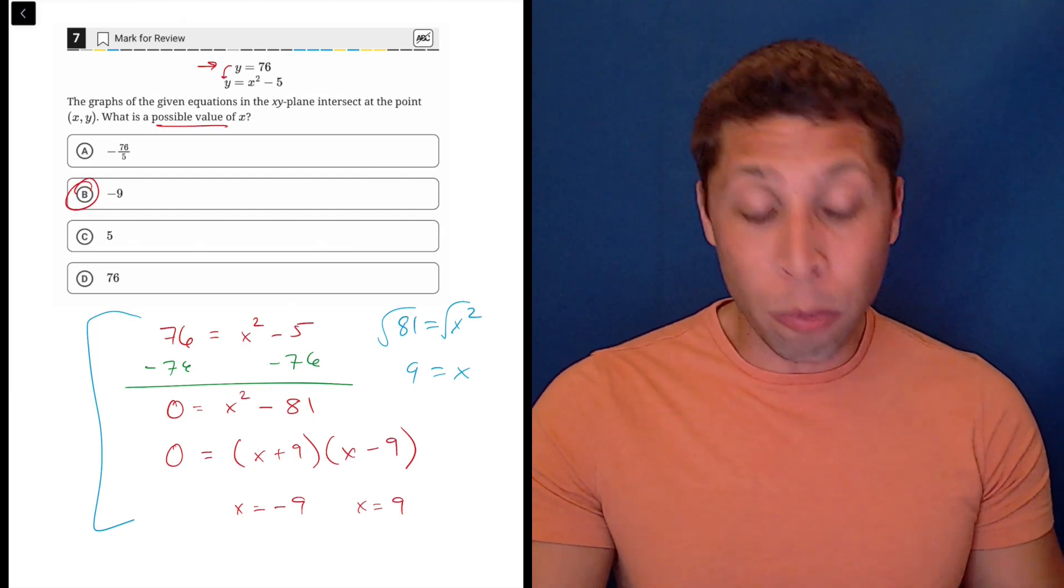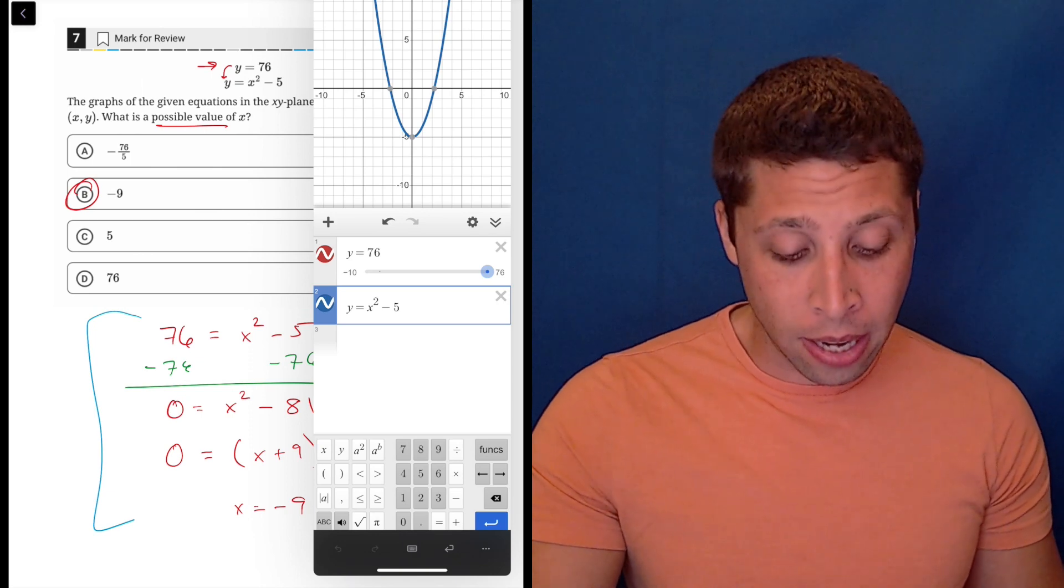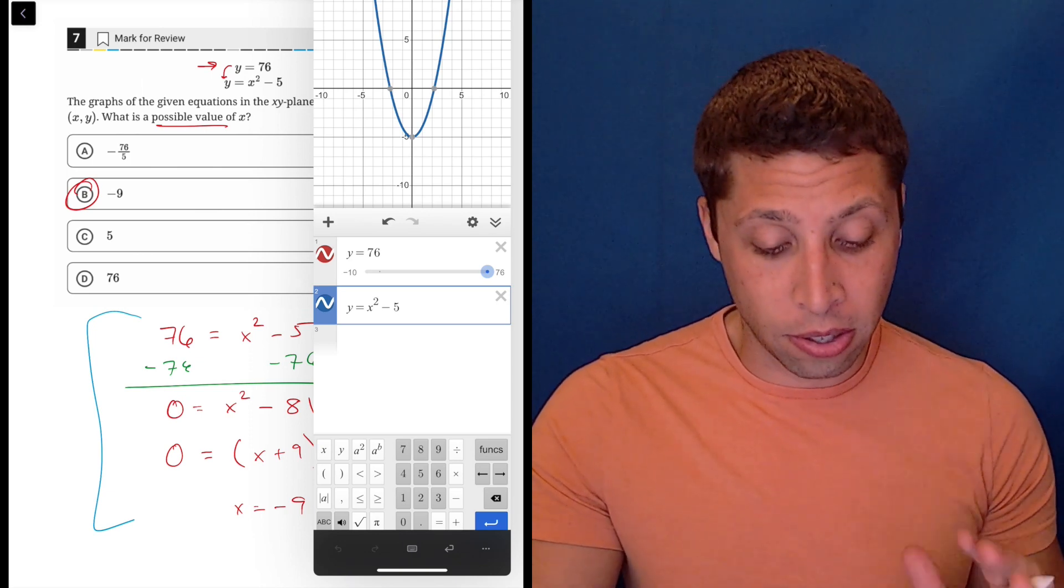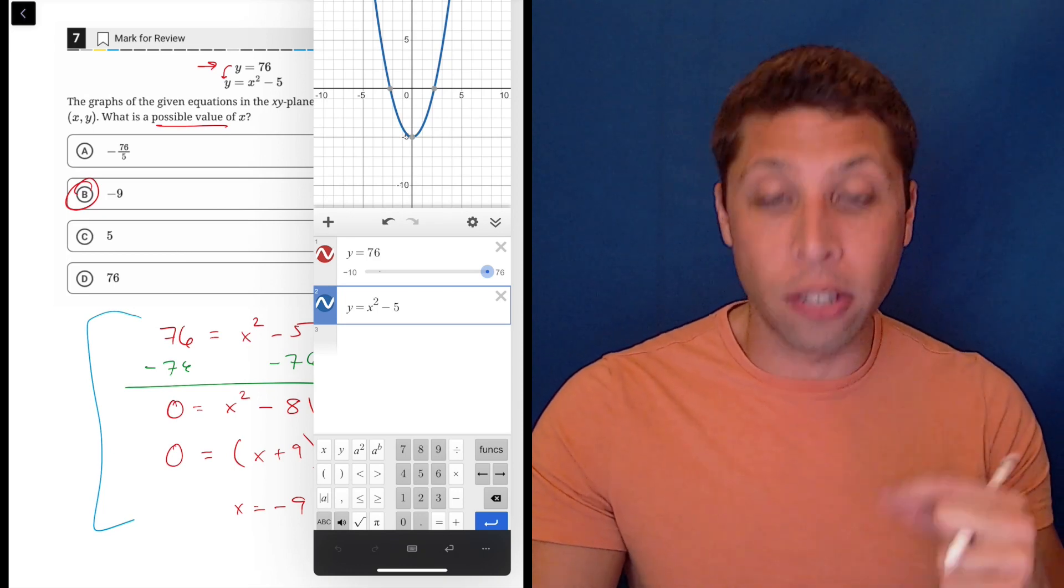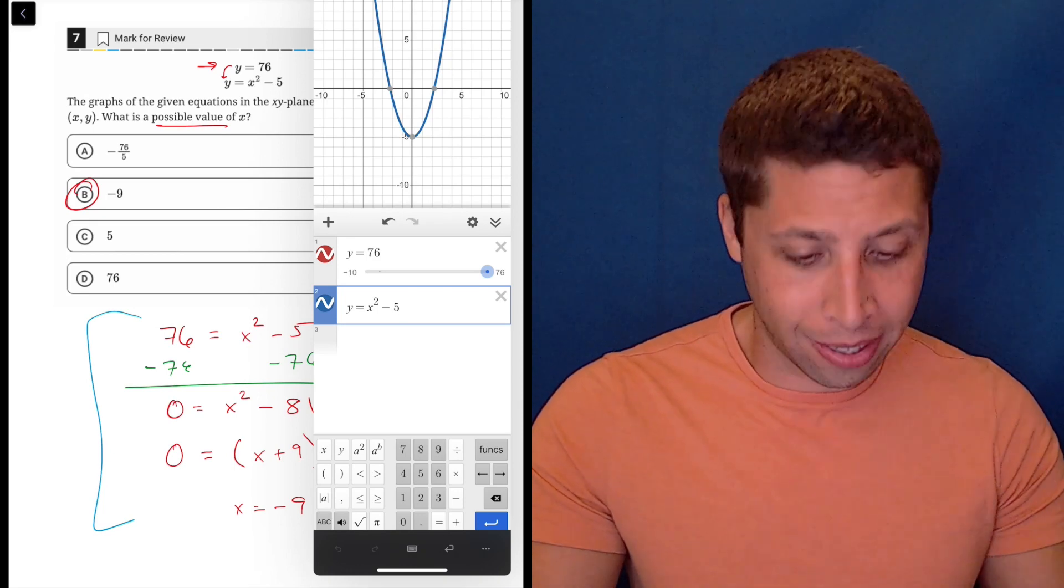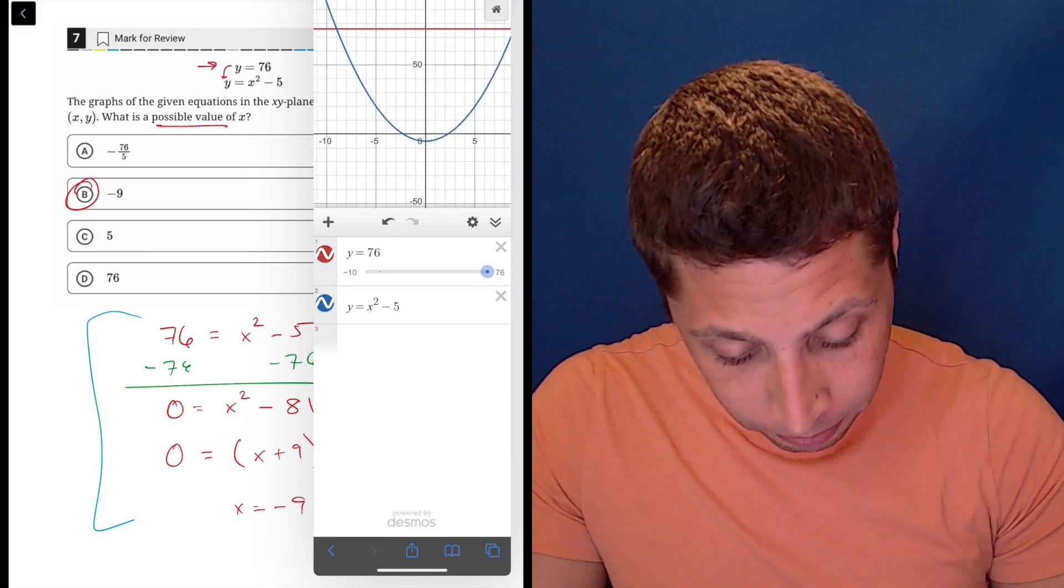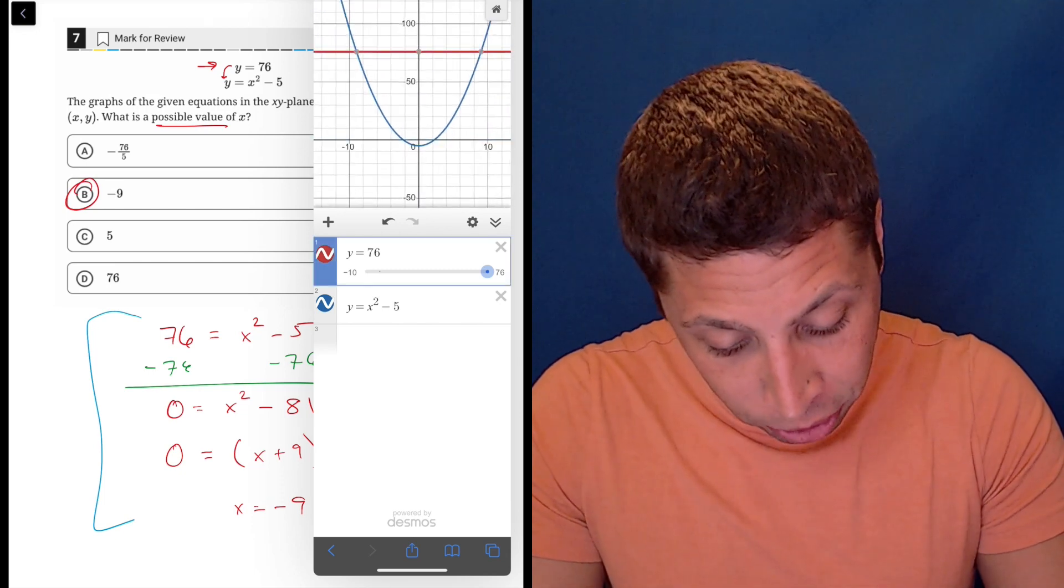However, all of this is moot because most of the time we are just going to want to graph something like this. Here I've done it. And you can see that there's only the blue line here. This is the standard setting they have for the graph. So we are going to need to zoom out because Y equals 76 is very, very high up.